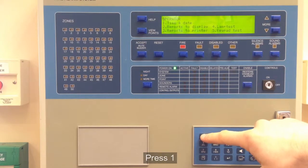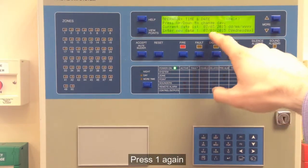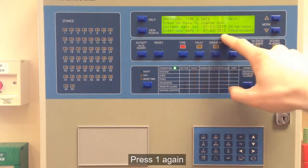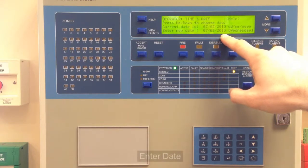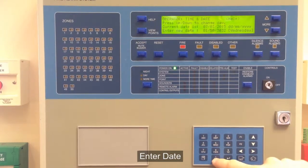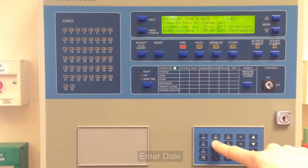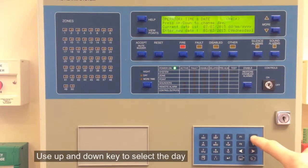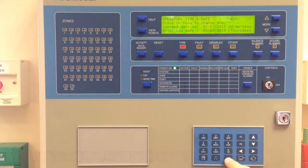So it's operator, time and date. The date comes up first and as you type in your number here, your date, you'll see these numbers move along. So we pick our date and we hit enter.